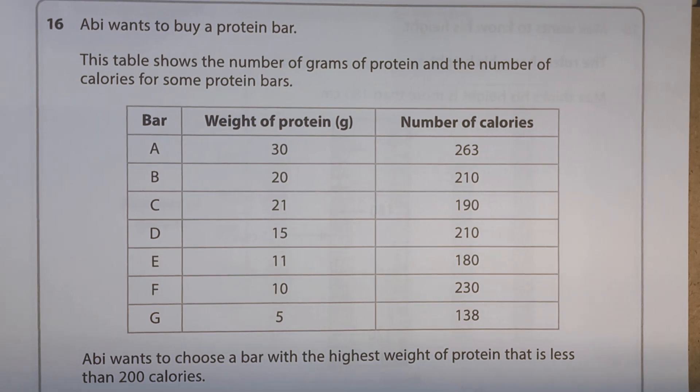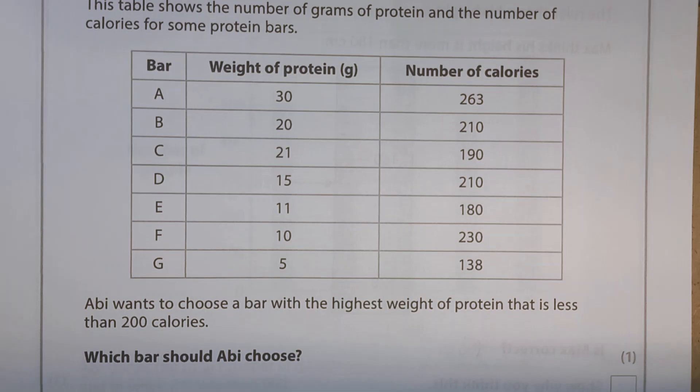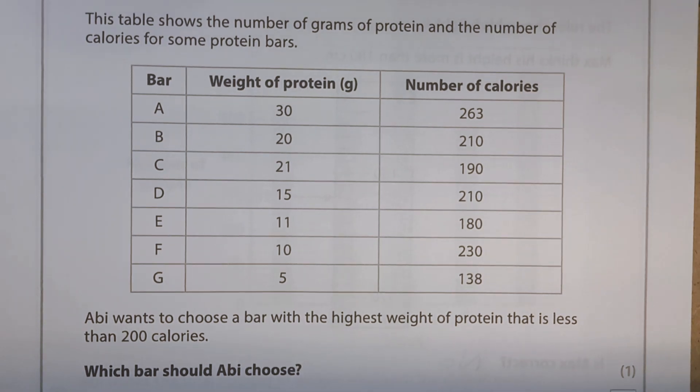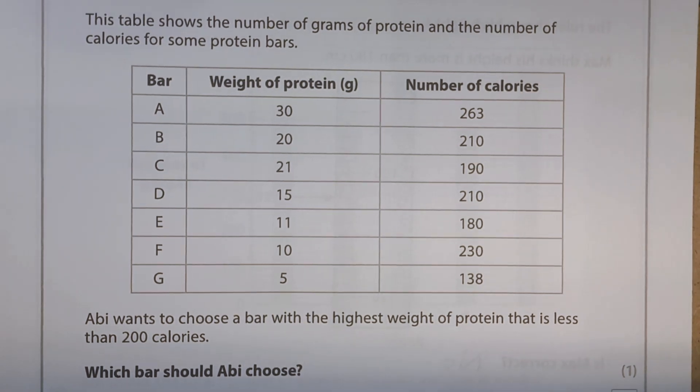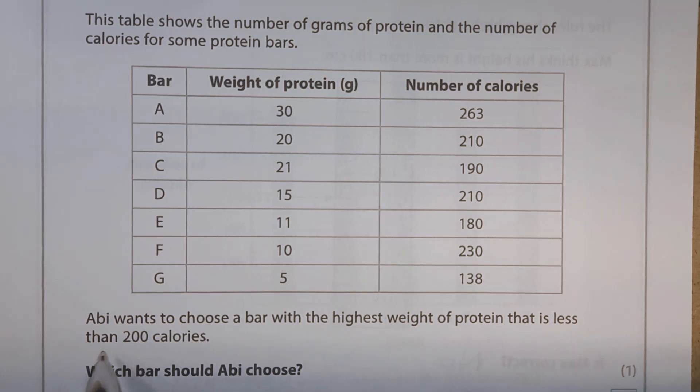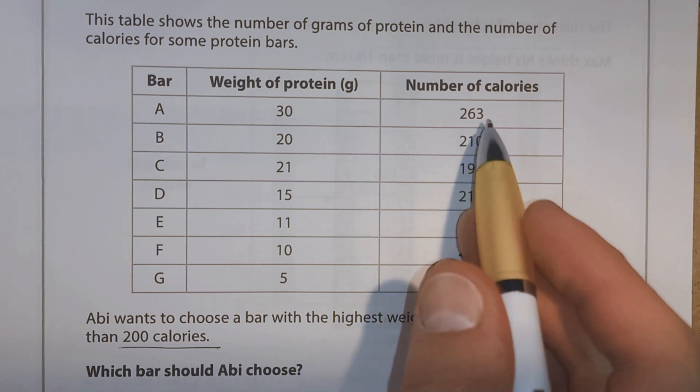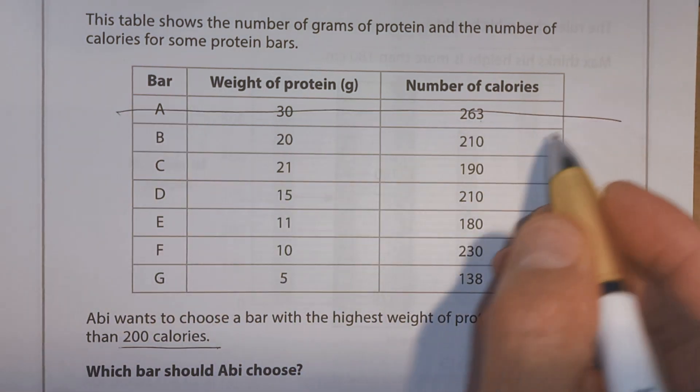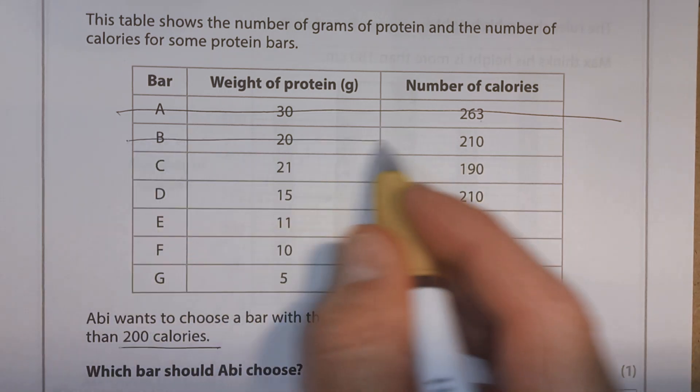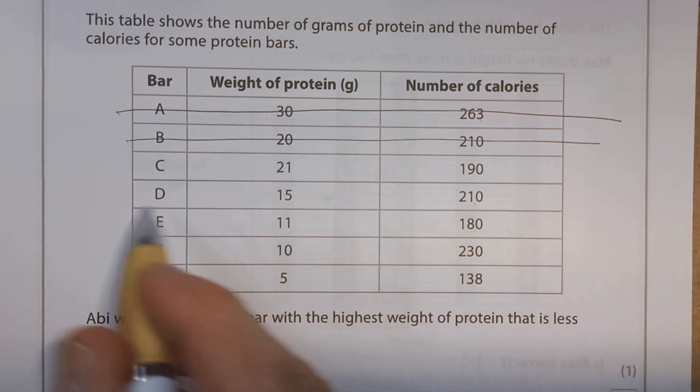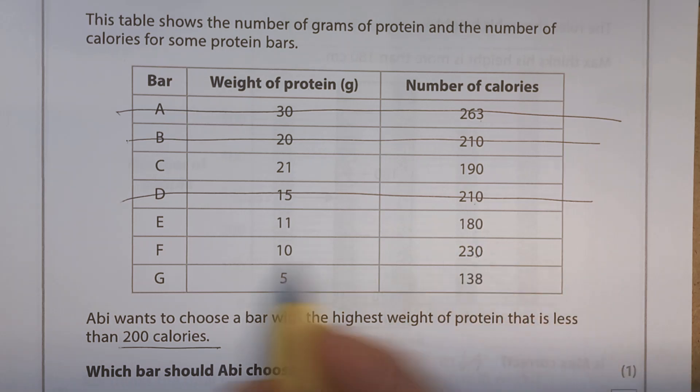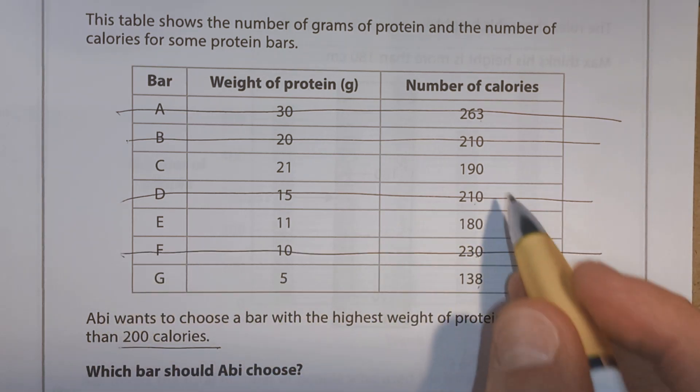Okay, question 16. Abbey wanted to buy a protein bar. The table shows the number of grams of protein and the number of calories for some protein bars. And we've got bars A to G. Abbey wants to choose a bar with the highest weight of protein that is less than 200 calories. It's got to be less than 200 calories. Okay. So this top one, that one's no good. This one is no good. This is less than 200. This one's not. That one's less. That one's not. And that one's less. So we've got one, two, three to choose from.